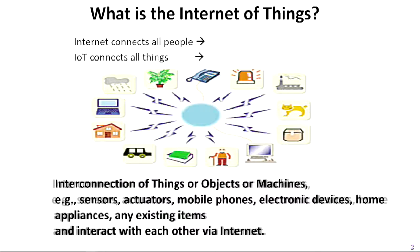Everybody talks about IoT. The Internet connects all people — that's the classical Internet — and IoT connects all things. Things can be objects or machines: sensors, actuators, mobile phones, electronic devices, home appliances, any existing items like bottles, chairs, tables, humans. They can all be defined as things or objects, connected to each other.